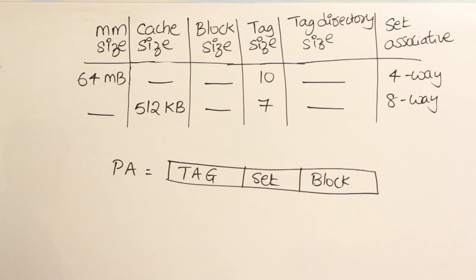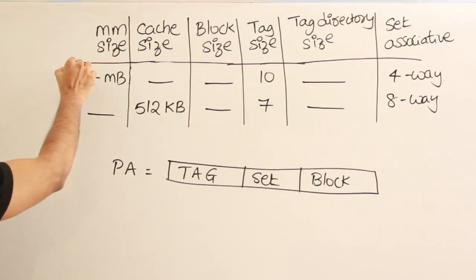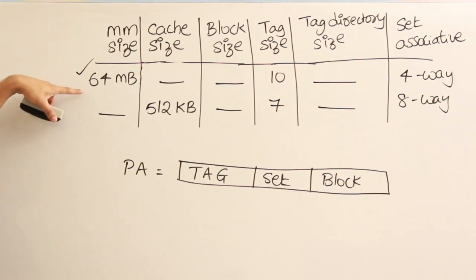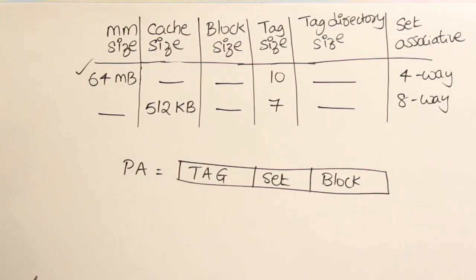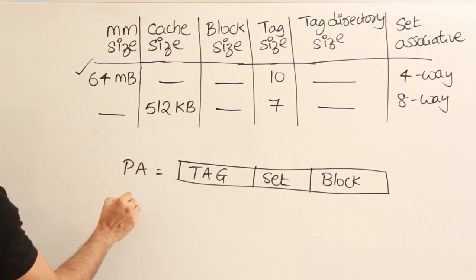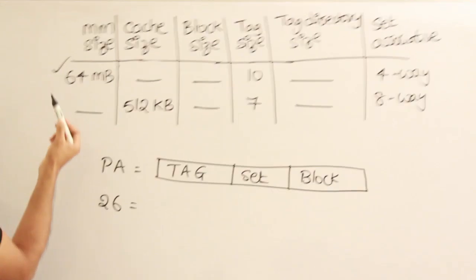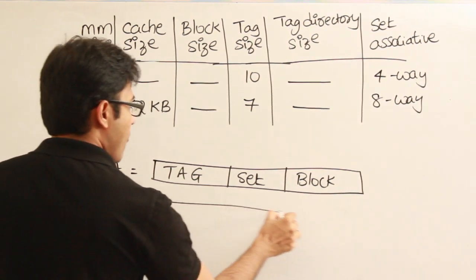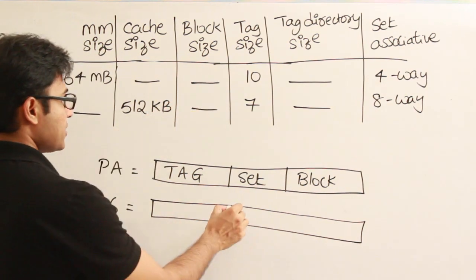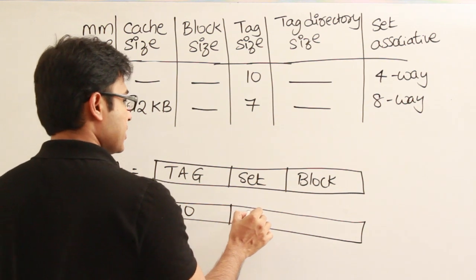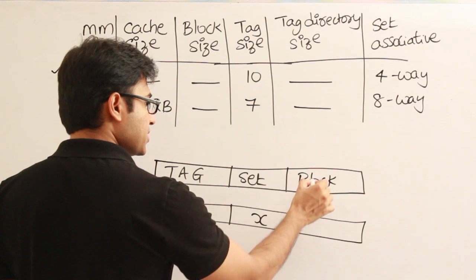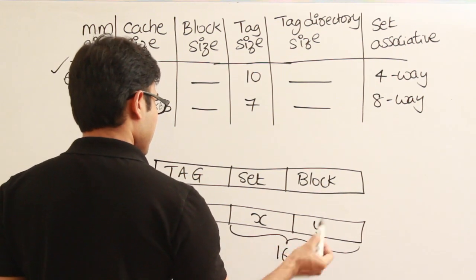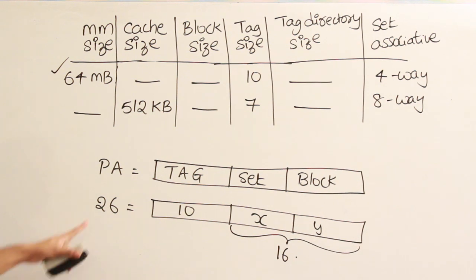So there are three fields. Physical address size: since 64 MB is the given size, we know 64 MB equals 2^26, so the physical address requires 26 bits. The tag is given as 10 bits. If the set field is X bits and block offset is Y bits, then X plus Y equals 16.